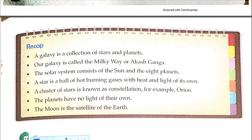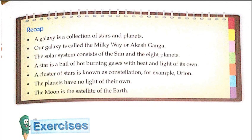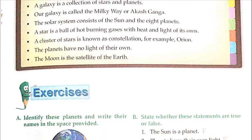Recap: Our galaxy is a collection of stars and planets called the Milky Way or Aakash Ganga. The solar system consists of the sun and eight planets. A star is a ball of hot burning gases with heat and light of its own. A cluster of stars forming a pattern is known as a constellation, for example Orion. Planets have no light of their own, and the moon is the satellite of the Earth.